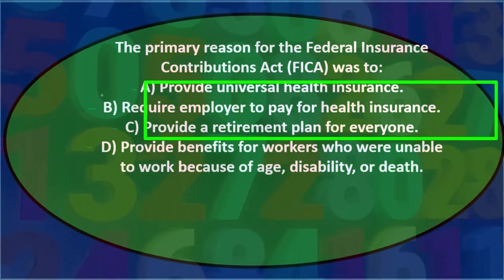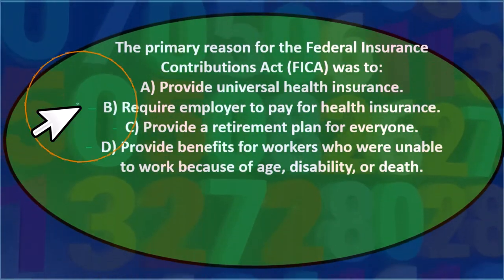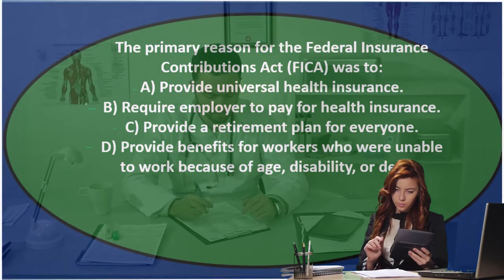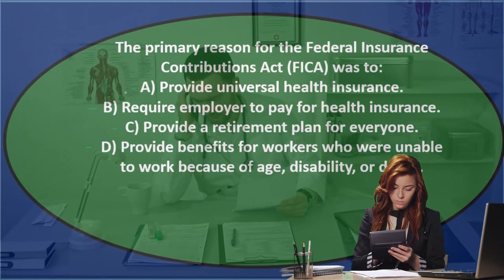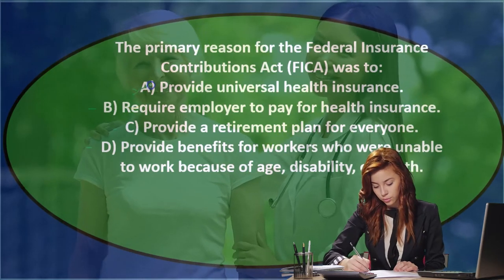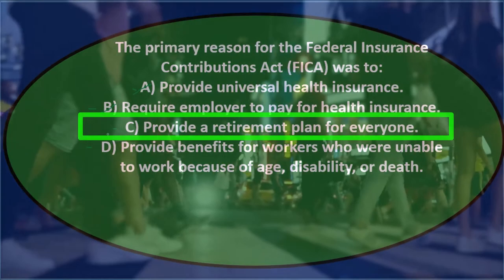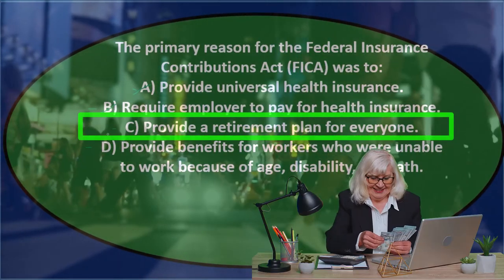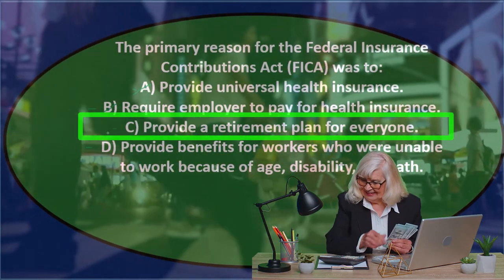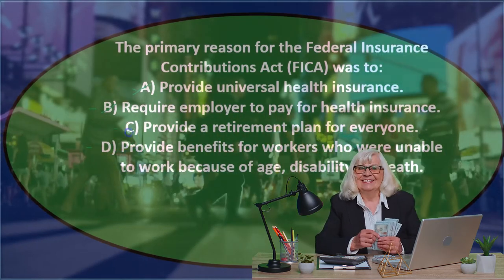We can't have two answers that are the same. A says 'provide universal health insurance' and B says 'require employer to pay for health insurance' — both are saying there's going to be health insurance in it. It's not really health insurance; it's more like a safety net program when we're talking about Medicare. It's not really providing universal coverage; it's providing more of a safety net, which is the original goal. C says 'provide a retirement plan for everyone' — Social Security is thought of as a retirement plan, but originally it was a safety net.